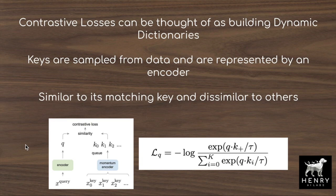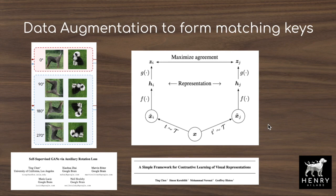Contrastive losses can be thought of as building dynamic dictionary representations of keys and queries. Keys are sampled from data and encoded by the key encoder updated via momentum blending with query parameters. Positive keys are formed by data augmentation on the current query image — for example, taking different 224×224 crops from a 256×256 image to form the positive pair. SimCLR experiments with strong data augmentations such as rotations, color jitter, and crops to form these positive keys.